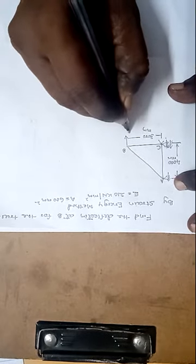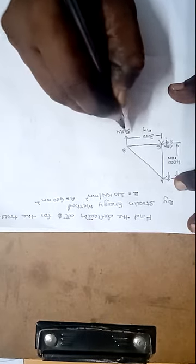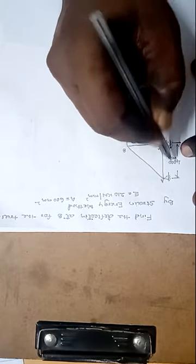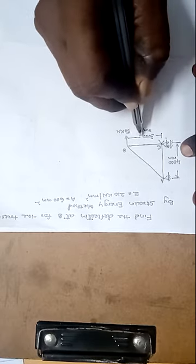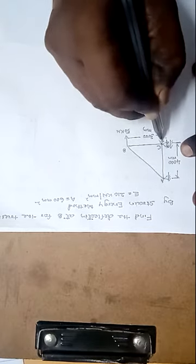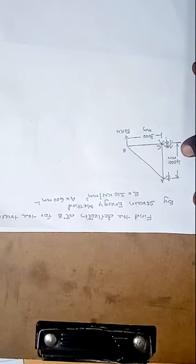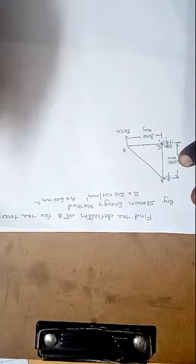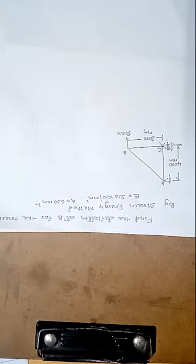The truss is subjected to a load of 50 kilonewton at B in the downward direction. The vertical height is 4000 millimeters and the horizontal distance is 3000 millimeters. One support is on a roller and one is on a hinge. The area of each member is given as 600 millimeter square and E equals 210 kilonewton per millimeter square.